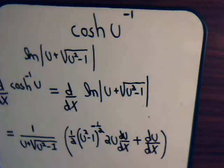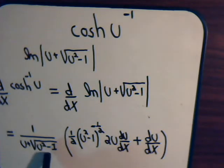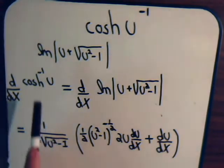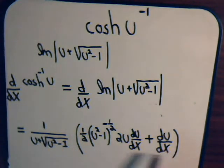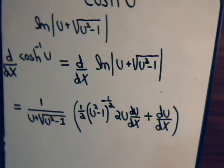So what we know is that the inverse hyperbolic cosine of u is equivalent to this logarithmic function. Taking the derivative of this logarithm gives us this expression. At this point the calculus part of the problem is over. The rest of the problem is just algebraic manipulation.